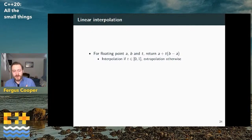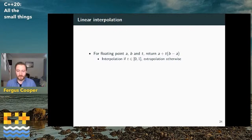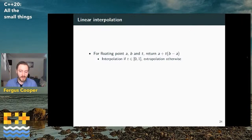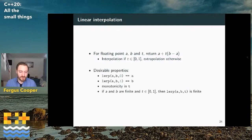Now on to linear interpolation. This really only makes sense for floating point types, which eliminates some complexity. For floating point a, b, and t, we return a plus some proportion of the distance from a to b — interpolating if t is in [0,1], extrapolating otherwise. There are certain desirable properties: if t=0 we should get back a; if t=1 we should get back b; it should be monotonic in t; and if a and b are finite and t is in [0,1], then the result should be finite.